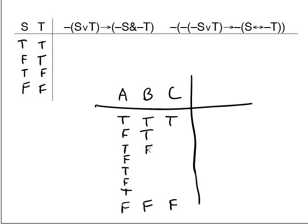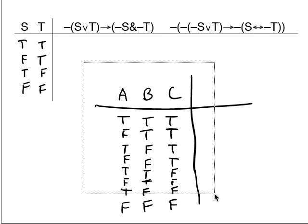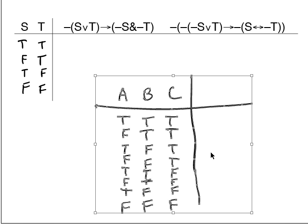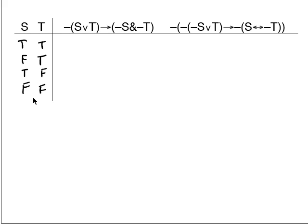In the second column, alternate in pairs: true, true, false, false, true, true, false, false. In the third column, alternate by fours: four trues, four falses. This is just an easy trick for generating all the possible combinations when you have three sentence letters. I've said in class that I won't give you any tables that have more than three sentence letters.